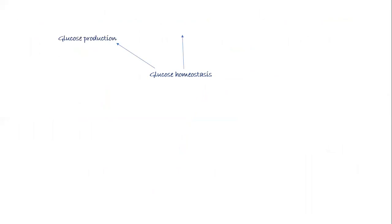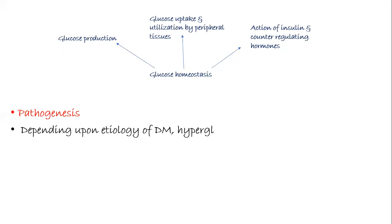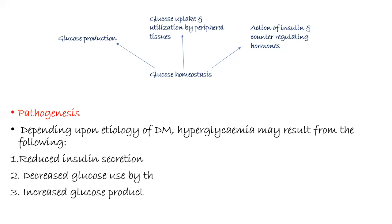Now we'll see glucose homeostasis. Glucose homeostasis is regulated by glucose production, glucose uptake, and utilization in peripheral tissues, and it depends on the action of insulin and counter-regulating hormones. Depending on the etiology of diabetes mellitus, hyperglycemia may result from reduced insulin secretion, decreased glucose use by the body, or increased glucose production.